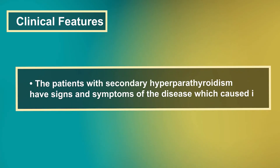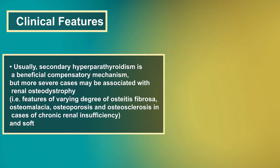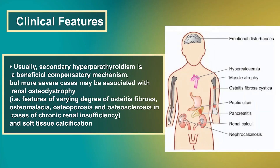Patients with secondary hyperparathyroidism have signs and symptoms of the disease which caused it. Usually, secondary hyperparathyroidism is a beneficial compensatory mechanism, but more severe cases may be associated with renal osteodystrophy — featuring a varying degree of osteitis fibrosa, osteomalacia, osteoporosis, and osteosclerosis — in cases of chronic renal insufficiency, as well as soft tissue calcification.